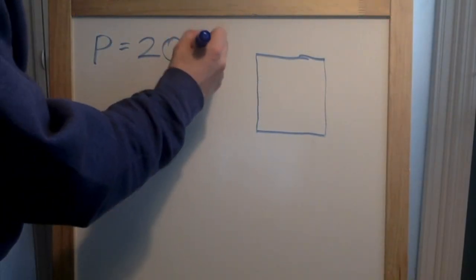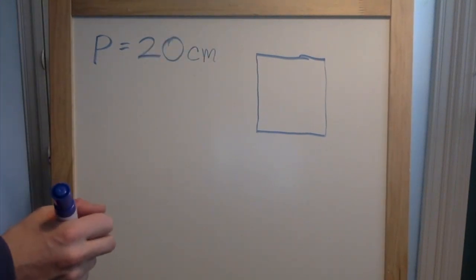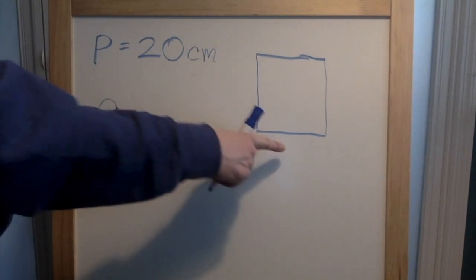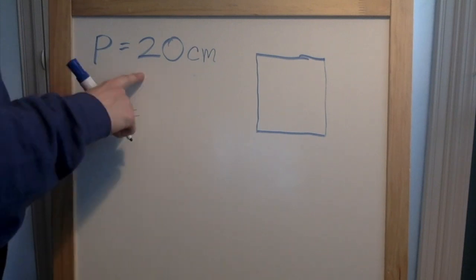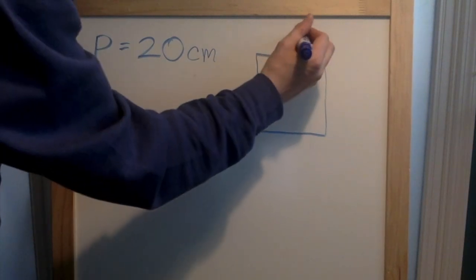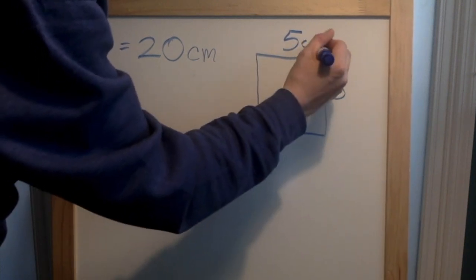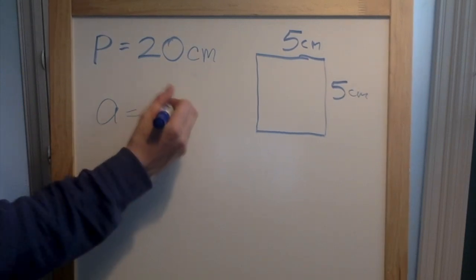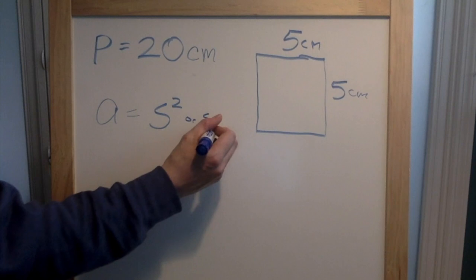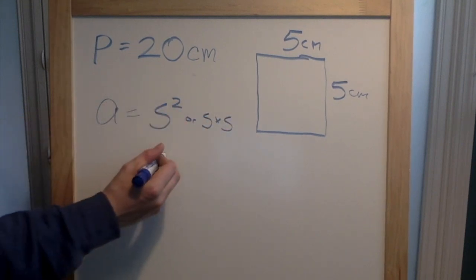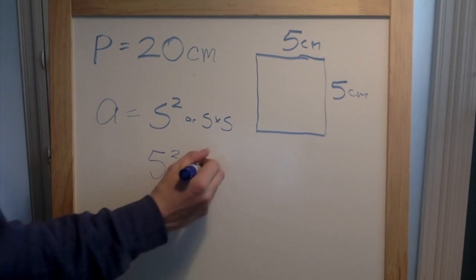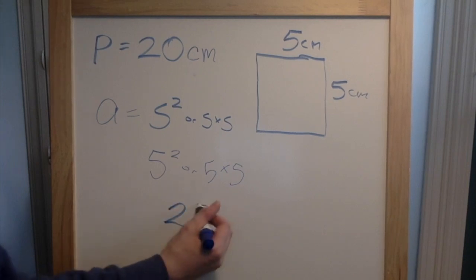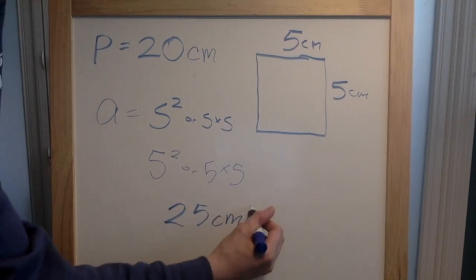What if the perimeter of this square is twenty centimeters? I want to find out what is the area of this square. I know that my square has four equal sides, so I'm going to divide twenty divided by four. Twenty divided by four is five, which means that each side is five centimeters. Now to find our area, just like before, we do side squared or side times side. That means that this area is five squared, which is the same as five times five. My area is twenty-five centimeters squared.